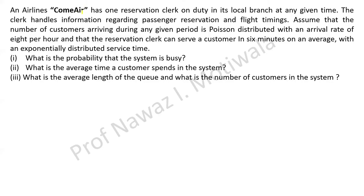Airlines — let us say I have named it Come Air — has one reservation clerk on duty in its local branch at any given time. The clerk handles information regarding passenger reservation and flight timings. Assume that the number of customers arriving — for arriving we will use lambda — is Poisson distributed with an arrival rate of 8 per hour. So we can directly write lambda is equal to 8 per hour.